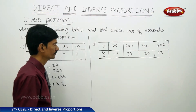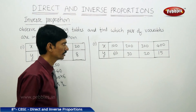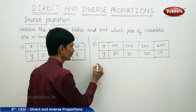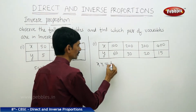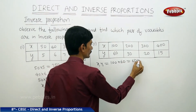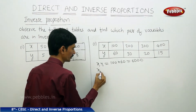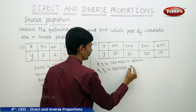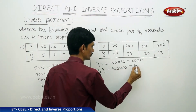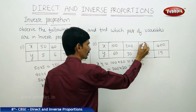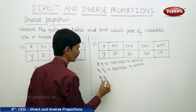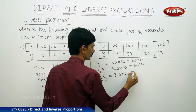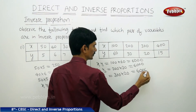Now let us check the second table, where x values and y values are given. We will find the product of these two quantities in each case. In the second case, x2 into y2 equals 200 into 30, which equals 6000. In the third case, x3 into y3 equals 300 into 20, which also equals 6000.